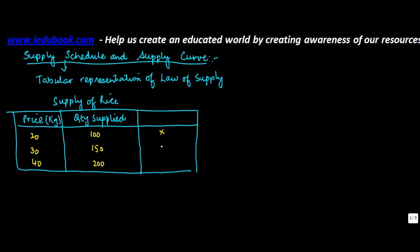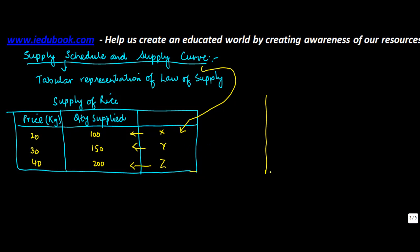Let's call these points X, Y, and Z. We will now represent these in the form of a graph. When you connect these three points, the curve formed is known as the supply curve.